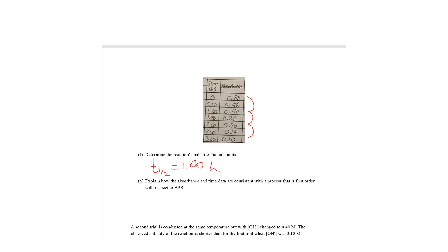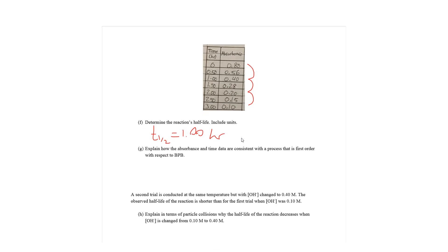Part G: Explain how the absorbance and time data are consistent with a process that is first-order with respect to BPB. Basically, what we see here is we see that the half-life does not change with concentration, which is exactly what a first-order reaction is, or a characteristic of a first-order reaction. Both 0th order and second-order both have concentration-dependent half-lives. So, T1/2 is constant. So, reaction is first-order with respect to BPB.